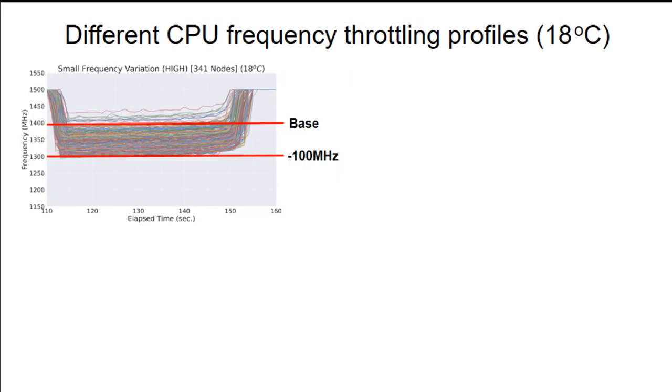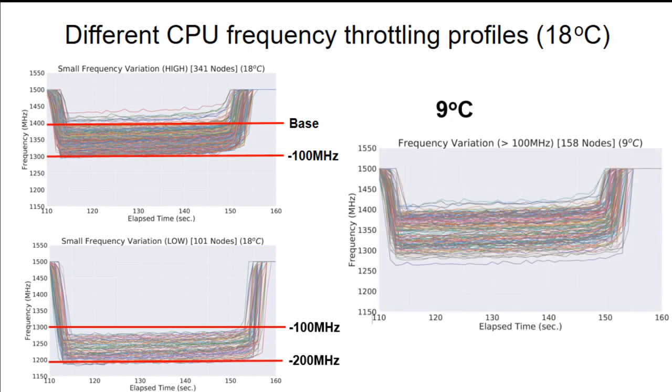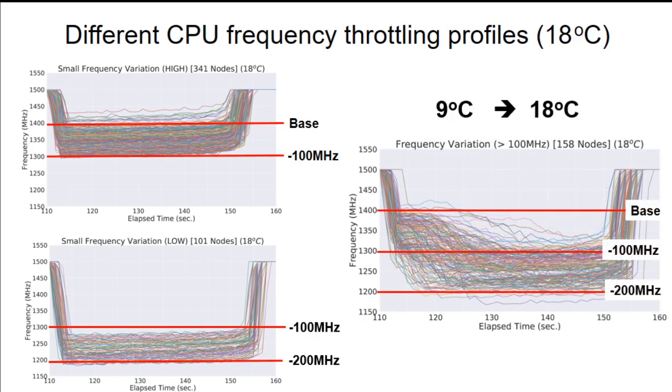One is a group of compute nodes where the frequency maintains constant at higher frequency range within 100 MHz from the base frequency. Another group was the nodes where the frequency also maintains constant, but at much lower frequency. And another group was where at low temperature, the frequency remains constant, but it drops when increasing the temperature. And probably due to the activation of the DVFS mechanism in order to maintain the CPU within the TDP limits.